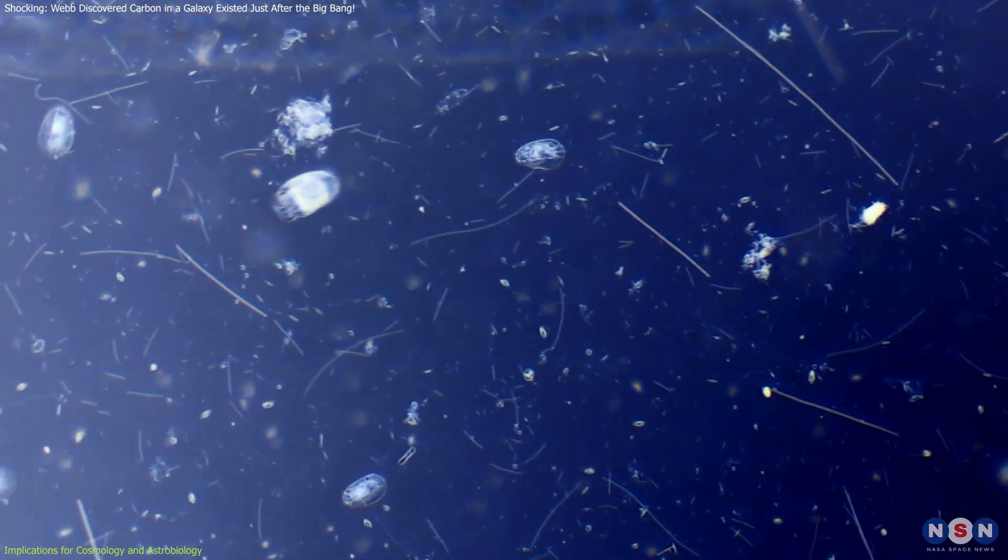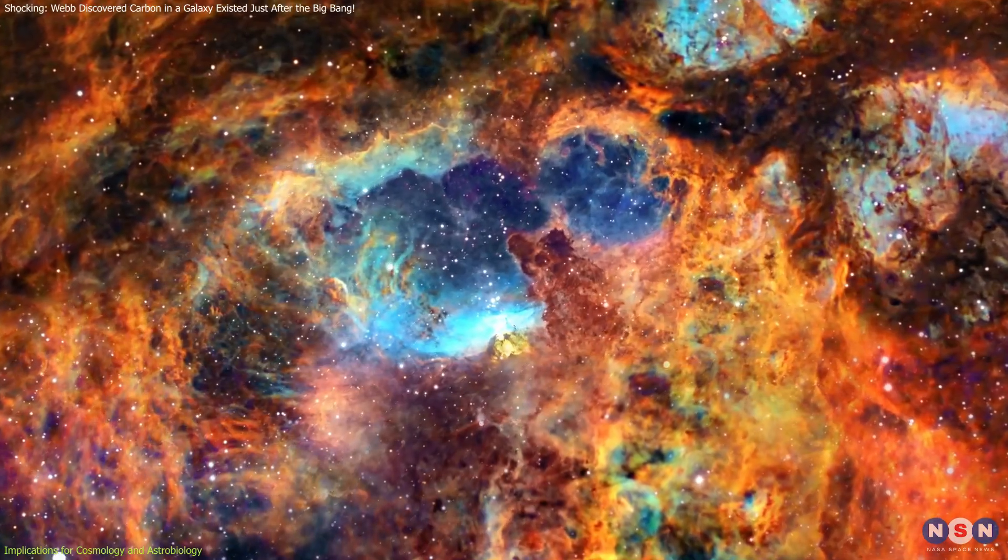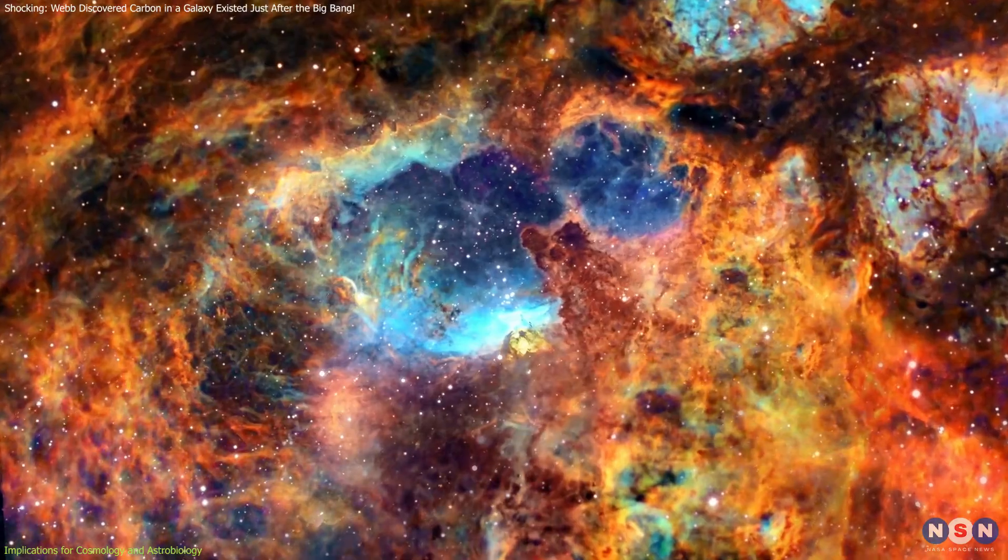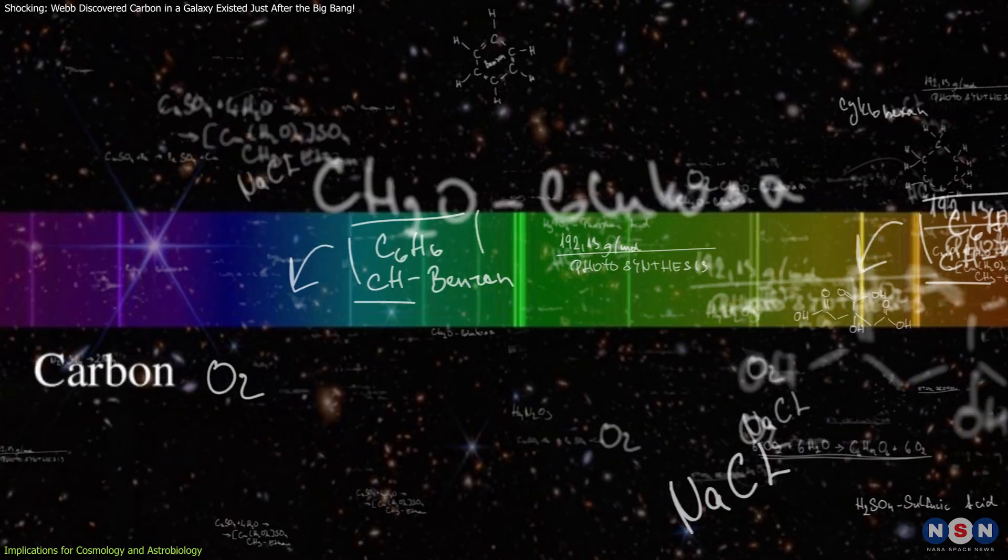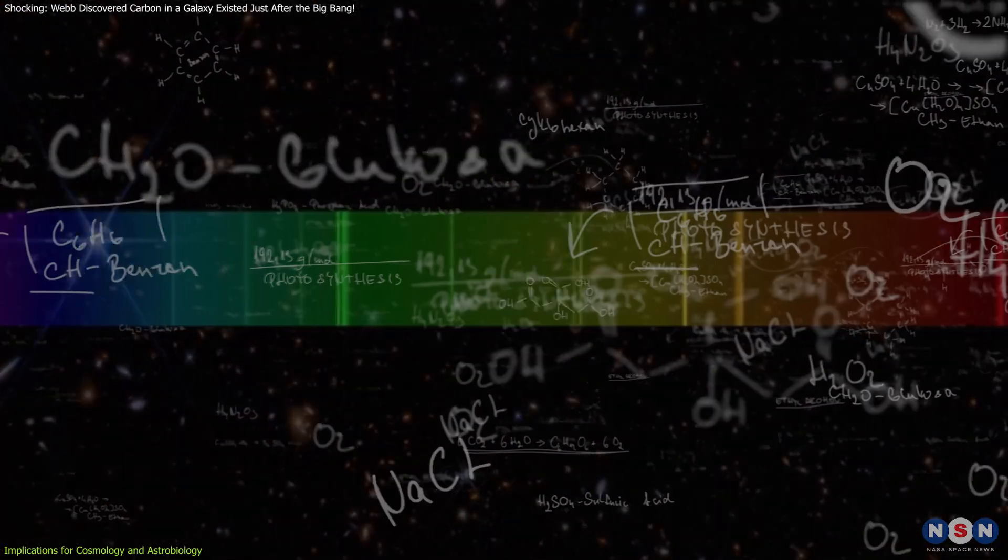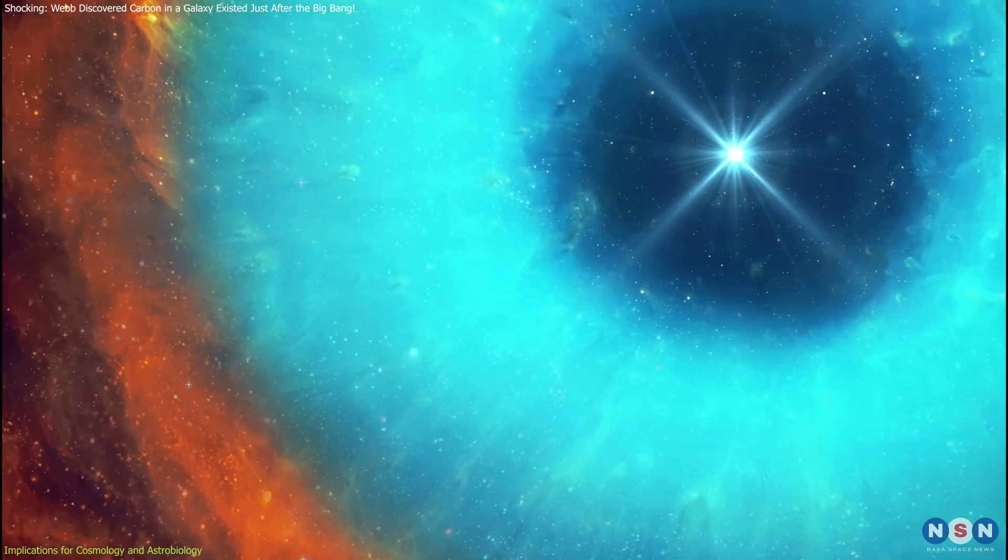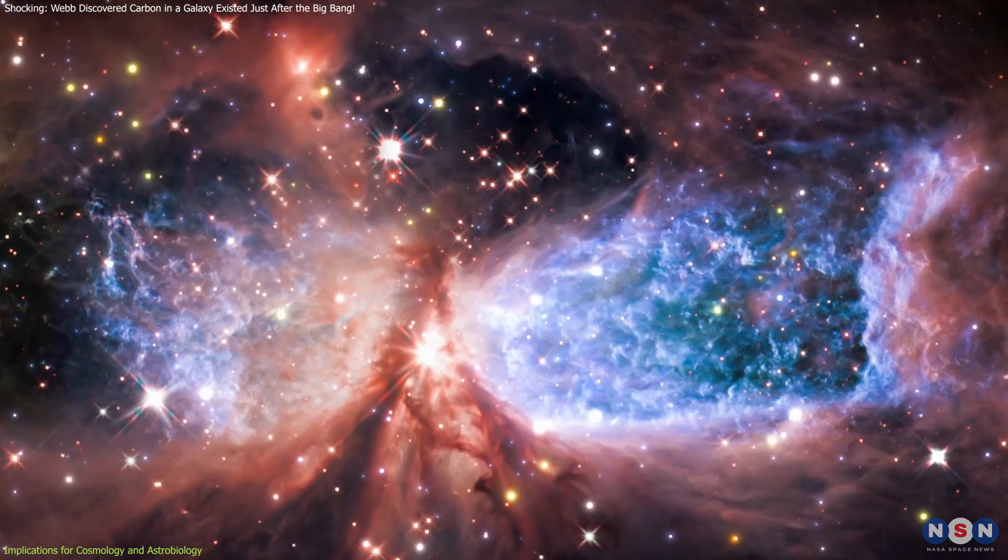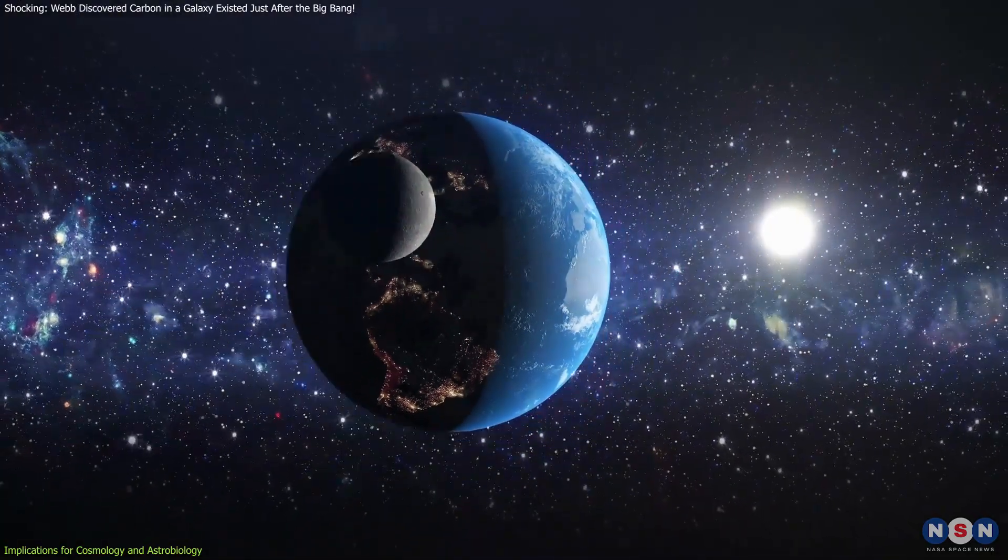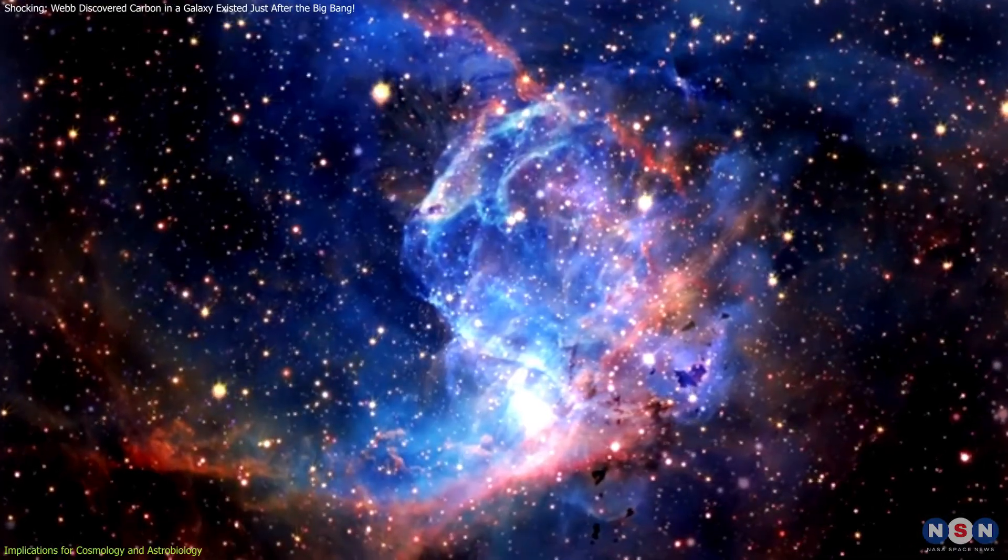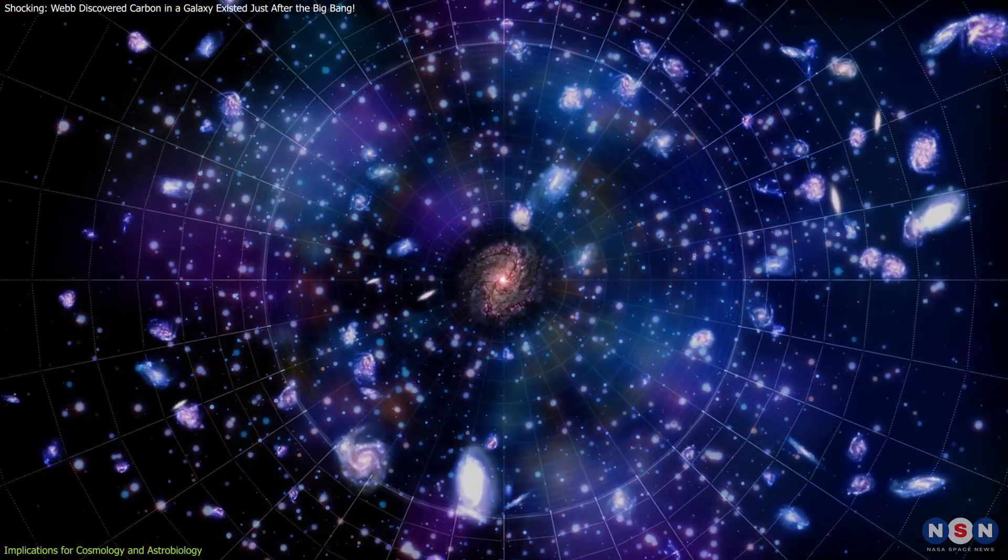Finally, the implications extend to the potential for life and emergence of life. The early availability of carbon, fundamental for organic molecules, raises intriguing questions about the potential for life in the universe. This early availability could impact prebiotic chemistry, suggesting that the conditions necessary for the emergence of life could have been established much sooner than previously thought. Understanding the connection between element abundance and planetary conditions can help identify potential sites for life beyond Earth. This discovery suggests that carbon-rich environments capable of supporting life could have existed early in the universe's history.